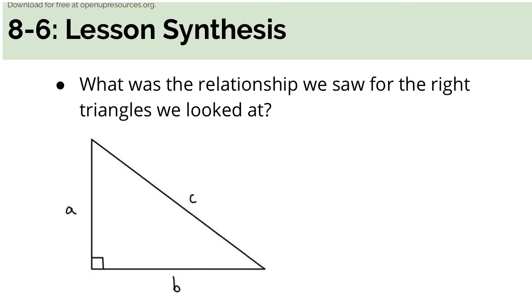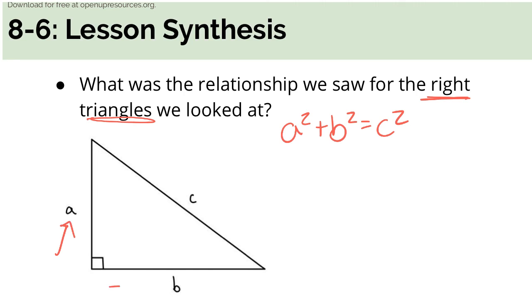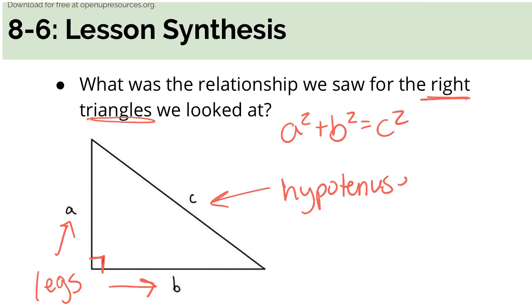The relationship we saw today for right triangles — only right triangles — is that A squared plus B squared will equal C squared. Sides A and B are the two sides connected to your right angle; they're called the legs — this is important vocabulary. And side C is opposite that right angle, and it's called the hypotenuse — really weird word, but that's what it's called. Make sure you have this written down in your book so that you can refer to it later on.